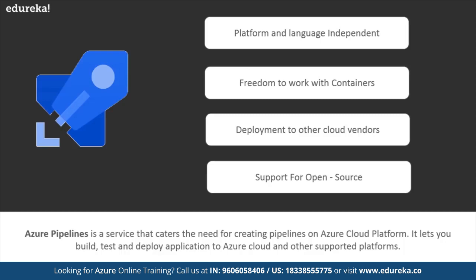Let me simplify the definition. When you develop software, there are steps involved: you create or pick up a piece of code, build it, run tests, make changes if needed, build and test again, and then deploy and deliver it to the end customer. Instead of doing these things separately, Azure Pipelines lets you bring all these actions under one umbrella and keep track of them all at one single location.